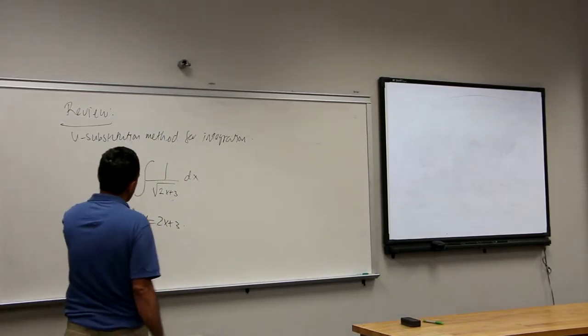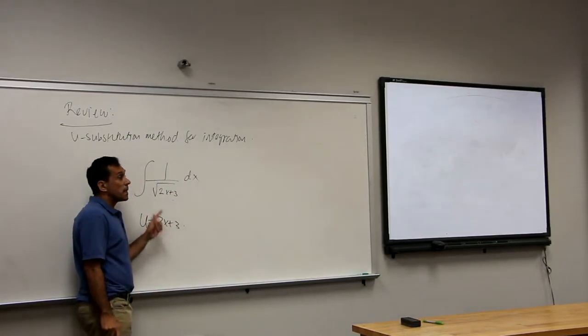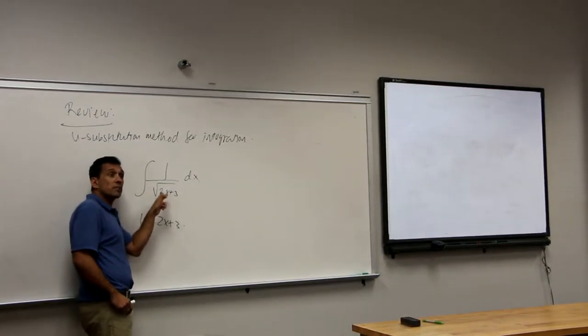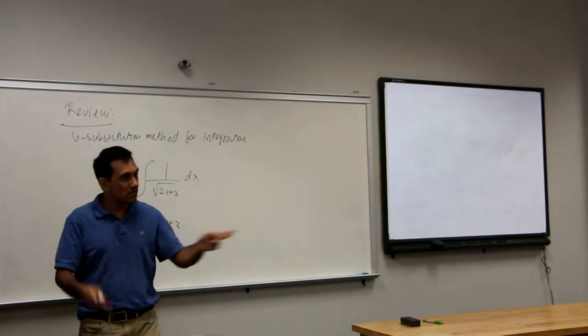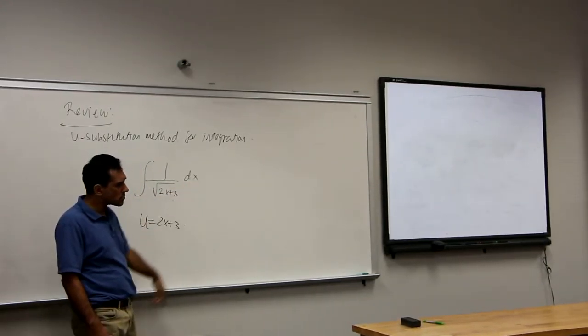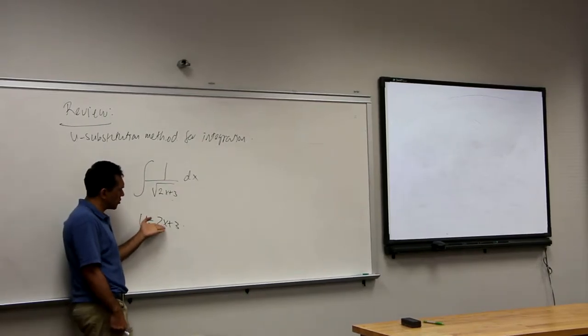So we'll take our cells. U is equal to 2x plus 3. And see, this says you are integrating the function of x, 1 over root 2x plus 3 with respect to x. So if you make the substitution u equals 2x plus 3, you are going to change the integrand to a function of u.